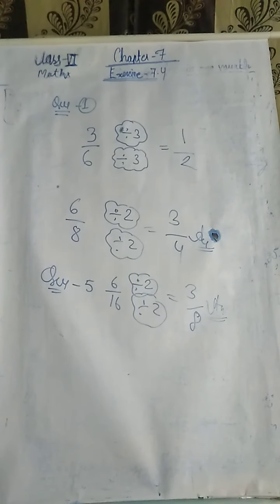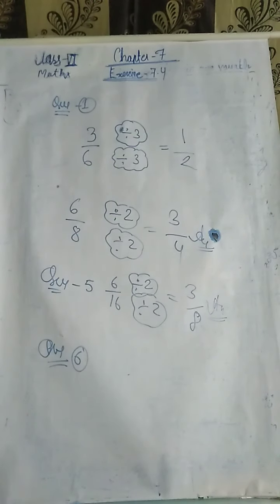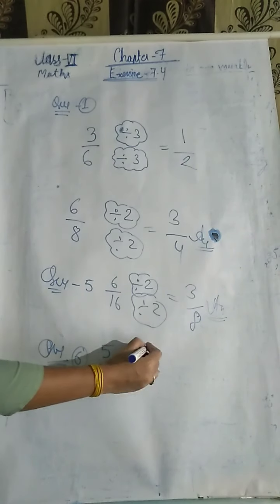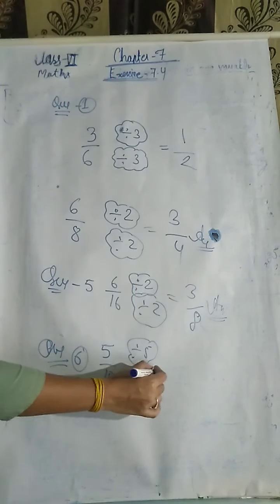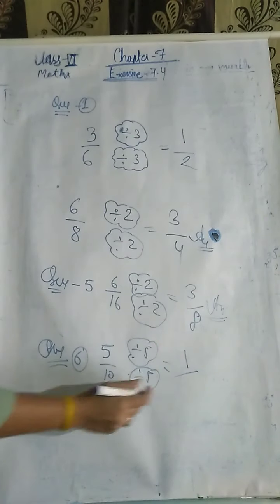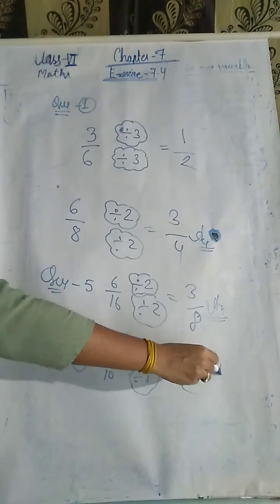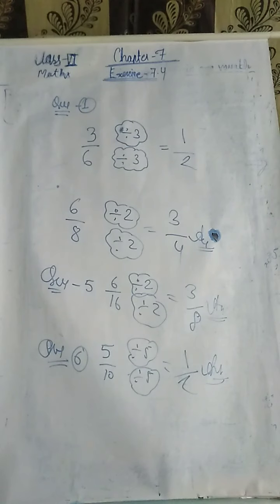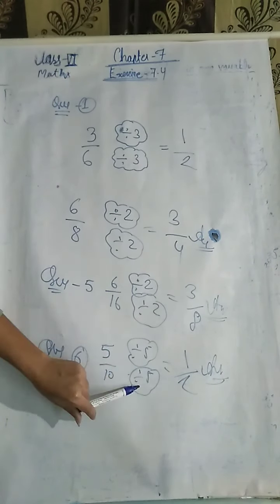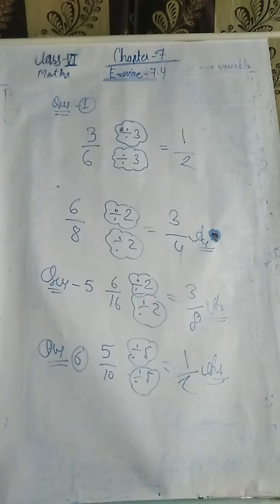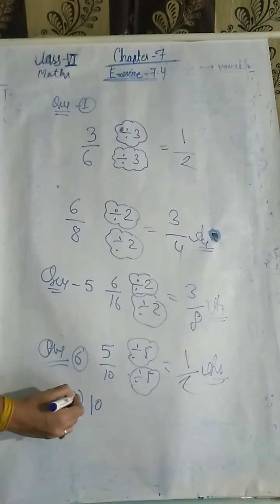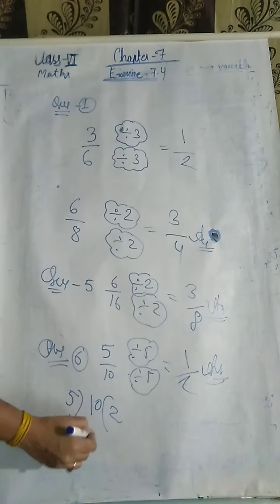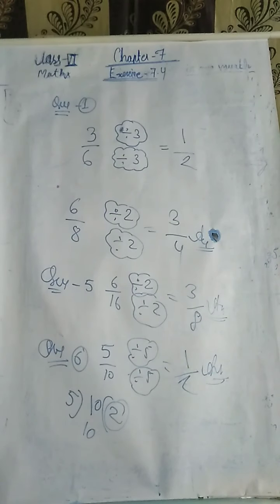Now question 5: 6 upon 16 divided by 2 — 2 threes are 6, 2 eights are 16 — answer is 3 upon 8. Question 6: 5 upon 10 divided by 5 — 5 ones are 5, 5 twos are 10 — answer is 1 upon 2. The number of times the divisor fits gives your answer. 1 upon 2 is the answer.